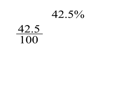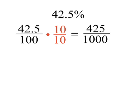Here's 42.5%. That then is 42.5 one-hundredths. And to convert this to a simple fraction with integers in both the numerator and the denominator, we'll multiply by 10 over 10 to get 425 thousandths, which as a decimal is .425.